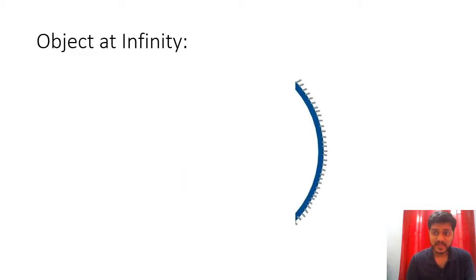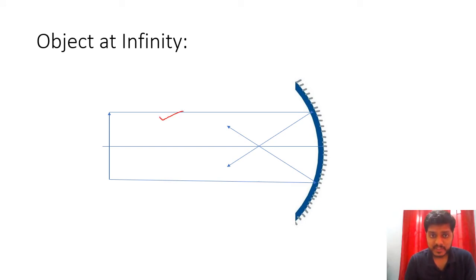Now objects at infinity. What if the objects are at infinity? So let us suppose that this is our object and here the ray diagrams are. So the rays are parallel to the principal axis here. This is the head part. This is the tail part.